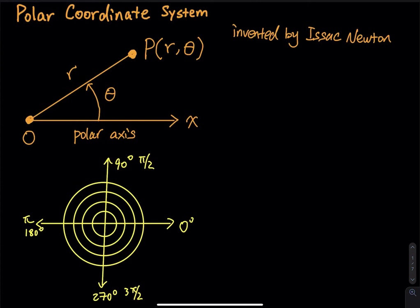A coordinate system represents a point in the plane by an ordered pair of numbers called coordinates. Usually we use Cartesian coordinates, which are the directed distance from two perpendicular axes.